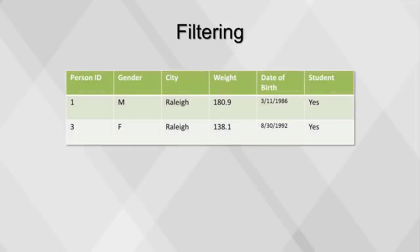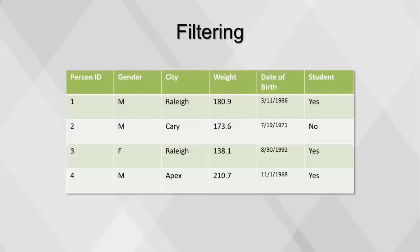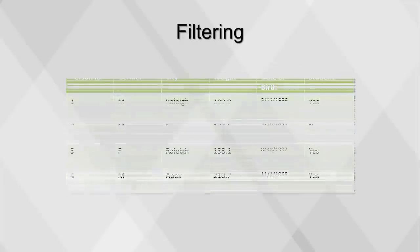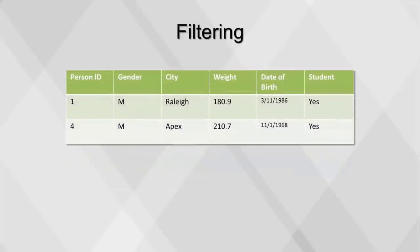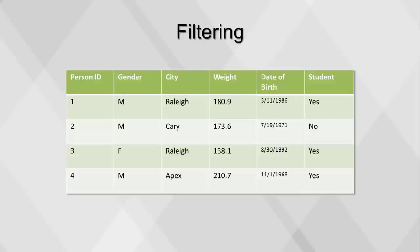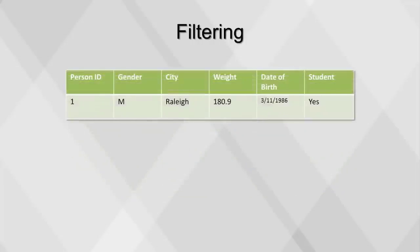Here's our table with the erroneous observation removed. This table is filtered to show only records of people who live in Raleigh. Here's our original dataset again — this table is filtered to show only records of people who weigh more than 180 pounds. Filters of different variables can be applied together. Combining the above examples, we can filter the original table for people who live in Raleigh and weigh more than 180, which results in only one observation.